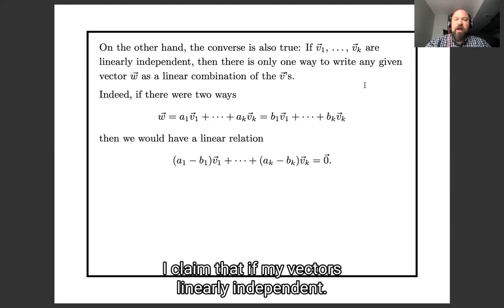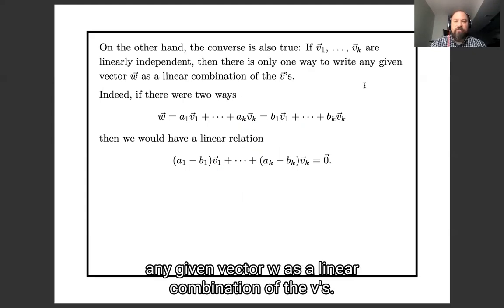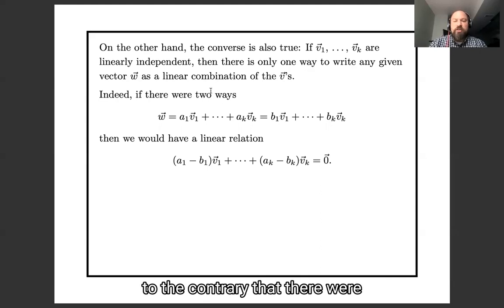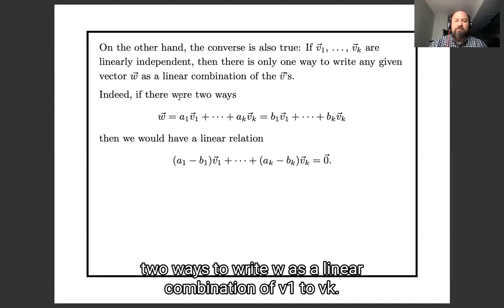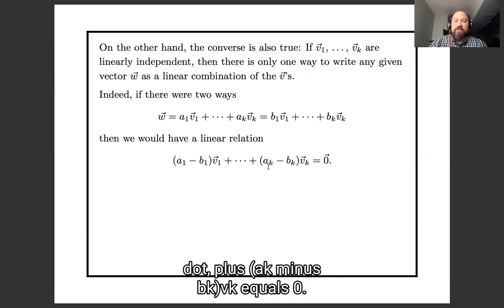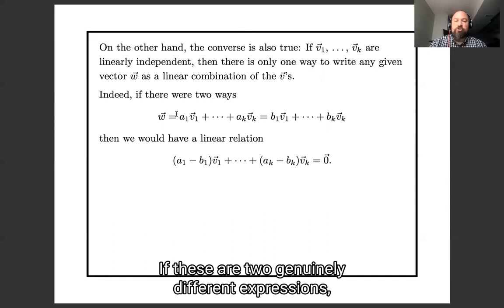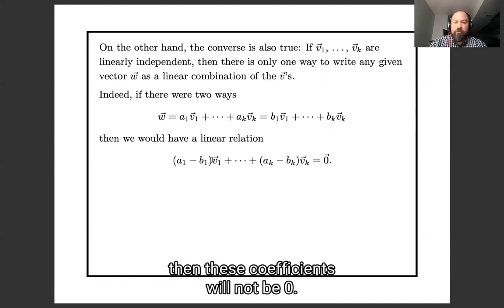On the other hand, I claim that if my vectors are linearly independent, then there's only one way to write any given vector w as a linear combination of the v's. So let's see why. So suppose to the contrary that there were two ways to write w as a linear combination of v1 through vk, both a1 v1 plus dot dot dot plus ak vk, and b1 v1 plus dot dot dot plus bk vk. Well then we could subtract these from each other, and we get (a1 - b1) v1 plus dot dot dot plus (ak - bk) vk equals zero, and so this would be a linear relationship between the v's. And if the a's were not just the same thing as the b's, these were two genuinely different expressions, then these coefficients would not be zero.